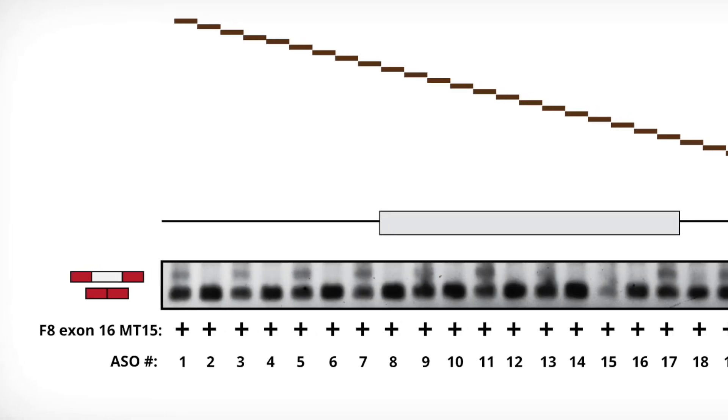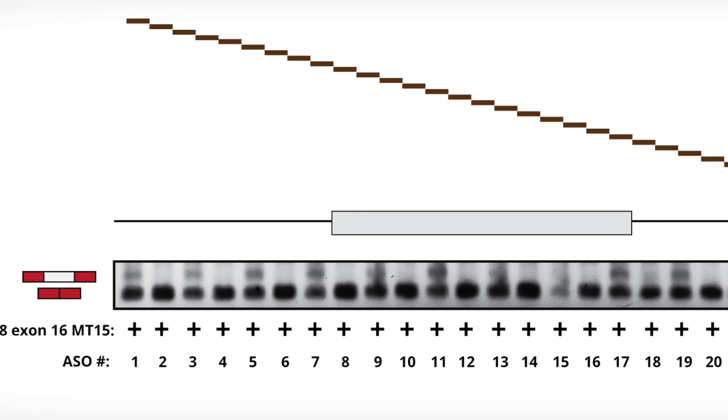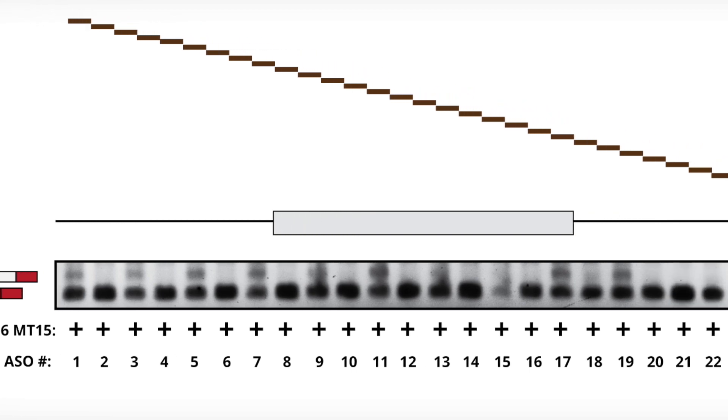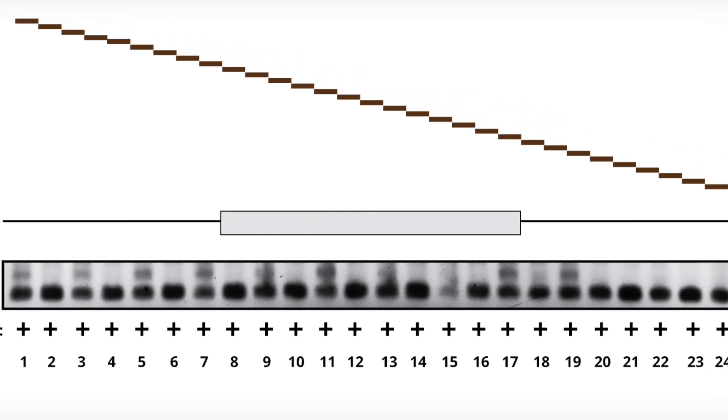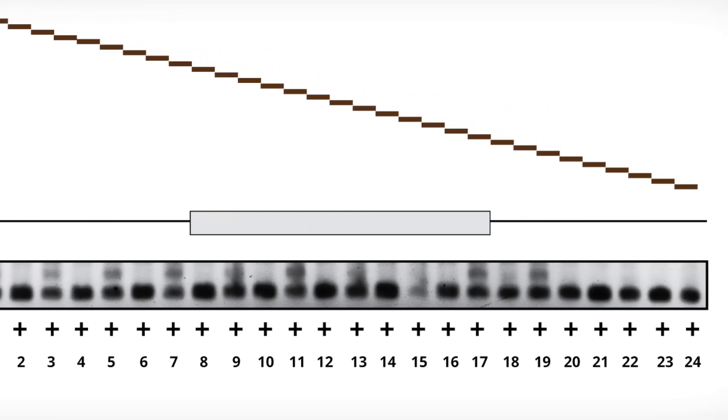A traditional ASO discovery process can be thought of as a very linear process where you're designing ASOs to tile across a very specific target. You can have hundreds and hundreds of designs, and it could take a lot of work to identify something that can actually be useful.